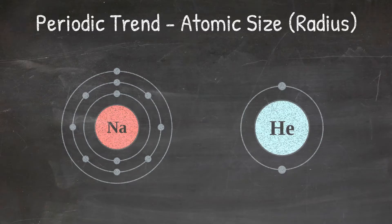Atomic size is an important characteristic of the atom as it helps us better understand why the atom reacts the way that it does. Bigger atoms will react differently than smaller atoms, and being able to compare atomic size is the first step to explaining these differences.